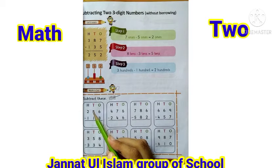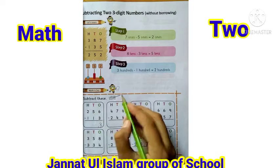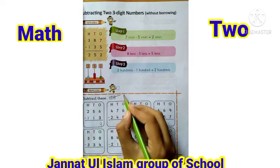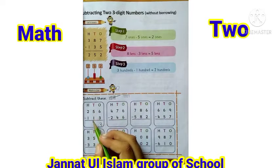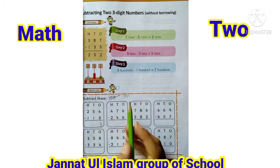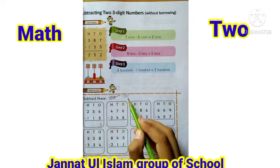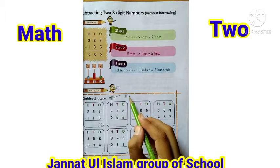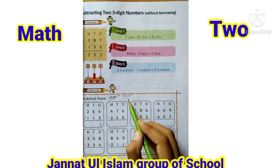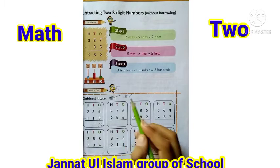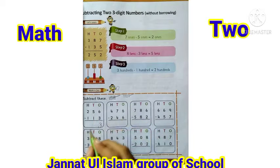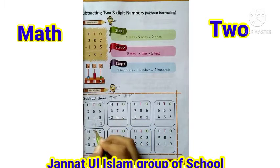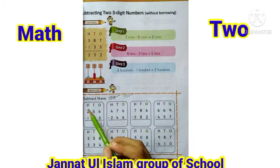آگے دیکھیں tens ہے، تو tens میں اوپر ہمارے پاس five ہے — five lines draw کریں گے: one, two, three, four, five۔ نیچے tens کے نیچے one ہے، تو ہم صرف one line کو cut کریں گے۔ One line cut کر دی، باقی جو lines ہیں وہ count کریں گے: one, two, three, four۔ Five میں سے one minus کیا تو four آیا — four لکھ دیا۔